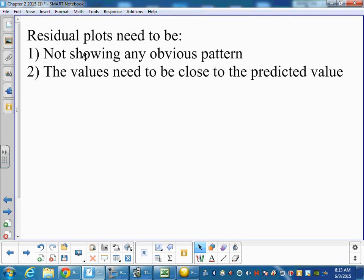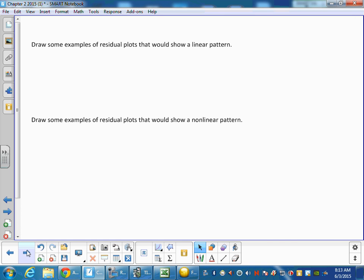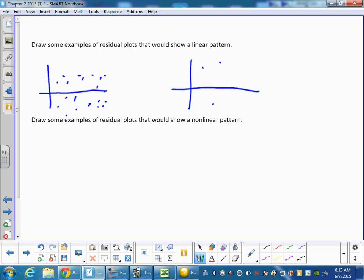Now when we're doing residuals, we don't want some obvious pattern. We don't want a curve, we don't want what we call fans, and we want the values to be close to the predicted value. So some plots that would show a linear pattern is if your residual plot is very scattered like this. This is what we want for a residual plot. If there's very few data points, sometimes people see a curved relationship. And that's just when there's very few data points, it's hard to predict. And it's easy to see patterns when there's just a few. So don't worry if you just have a few data points and it looks like a curve.